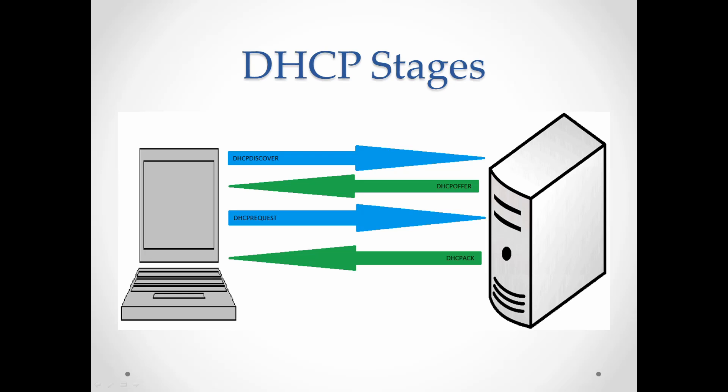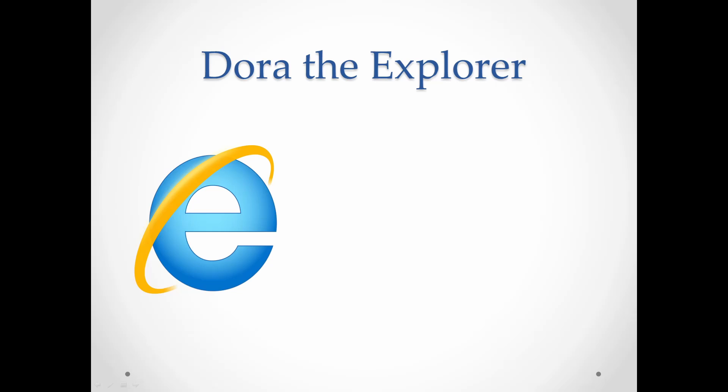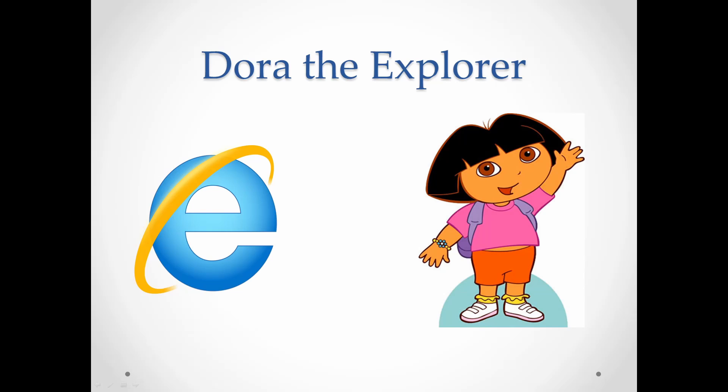The simplest way to remember the states of DHCP is to think of the little explorer Dora: Discover, Offer, Request, ACK. To become an explorer, you must know DORA.